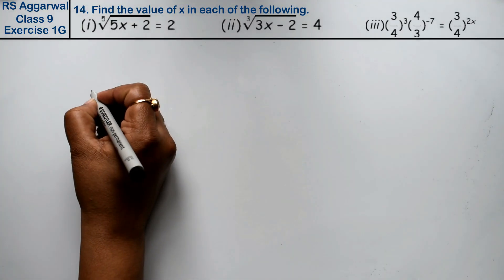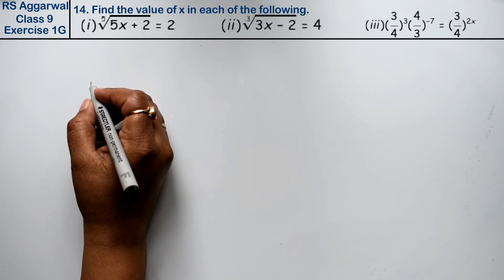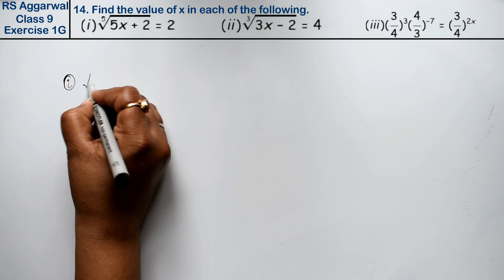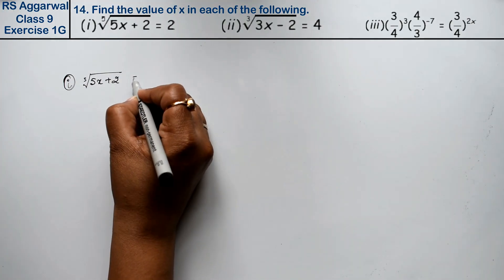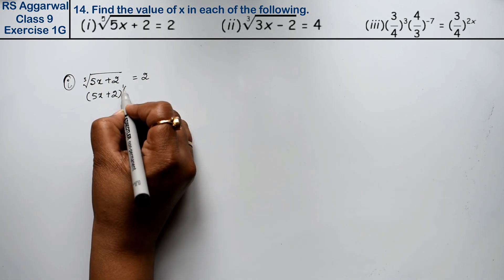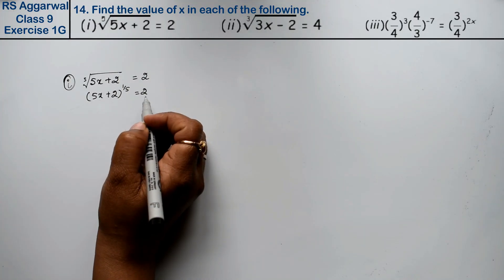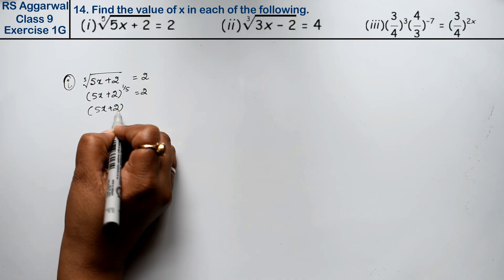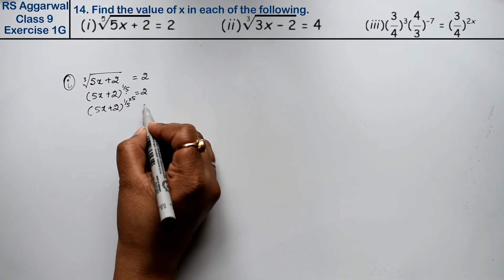Let's do question number 14 of Exercise 1g, that is Number System. Question number 14 is: find the value of x in each of the following. First part: the 5th root of (5x + 2) equals 2, which we write as (5x + 2) to the power 1/5 equals 2. If one side has a power but the other side does not, we apply the same power to both sides — here the power is 1/5, so we multiply both sides by the power of 5.